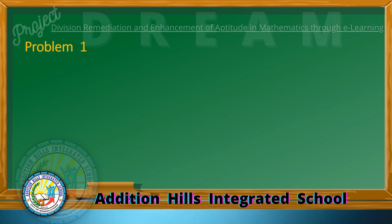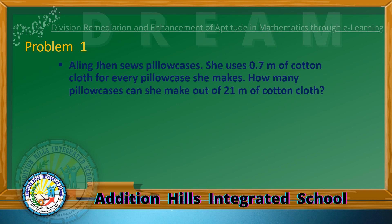Let's have Problem Number 1. Aling Jen sews pillowcases. She uses 7 tenths meter of cotton cloth for every pillowcase she makes. How many pillowcases can she make out of 21 meters of cotton cloth? Since the problem is asking the number of pillowcases Aling Jen can make out of 21 meters of cotton cloth, we are going to divide. The equation is: 21 divided by 7 tenths. 21 is the dividend; 7 tenths is the divisor.